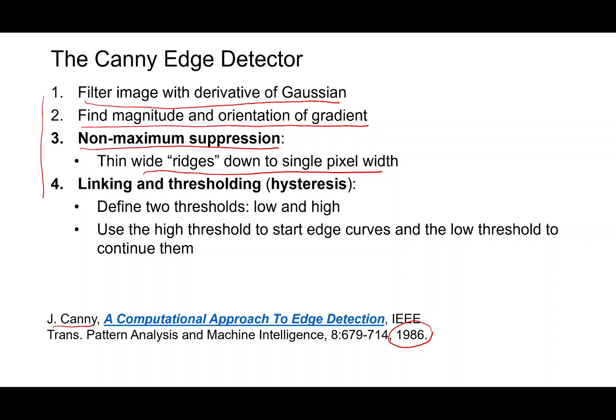And there is this linking and thresholding step, which is actually a hysteresis step that uses two thresholds, the low threshold and the high threshold for the edges. Using high threshold, we start the edge curves and then using the low thresholds, you continue them. We will look at them in more detail later.